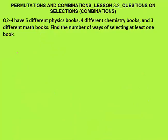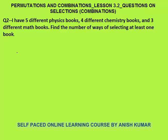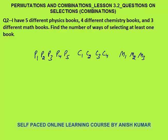Question 2: I have 5 different physics books, 4 different chemistry books, and 3 different maths books — 12 books in total. The question asks: find the number of ways of selecting at least one book. I need to select at minimum one book out of these 12 books. There is no criteria that I need to select one book of physics or chemistry specifically, so I don't have any restriction.